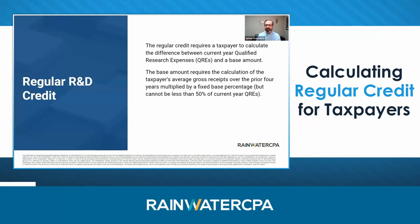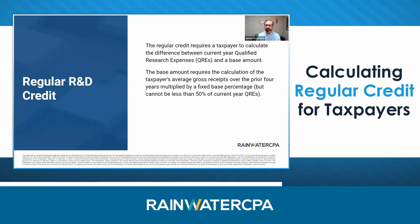The regular credit requires the taxpayer to calculate the difference of what the current year's QREs are above the base amount. The base amount requires the calculation of the taxpayer's average gross receipts over the prior four years by a fixed base percentage, but it can't be less than 50 percent of the current year QREs.